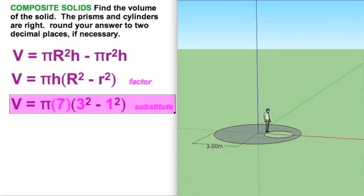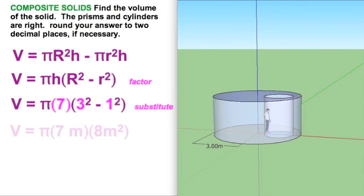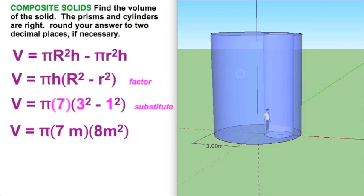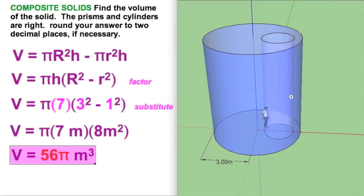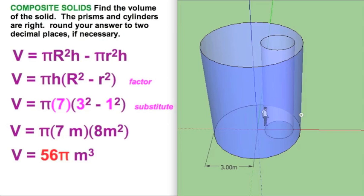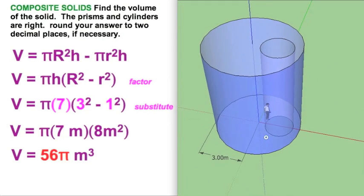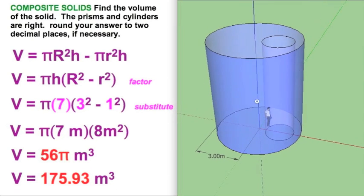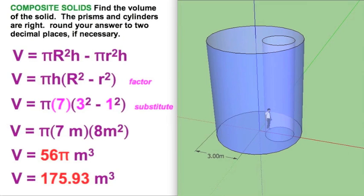We'll do the substitution. And we can simplify that. Remember, 3 squared, 9 minus 1 is 8. I'm putting the units in now. So I've got meters times square meters. And we all see where this is going. That's going to go to cubic meters. Now we can pull out our handy dandy calculator. And 56 times pi. And that's going to give us about, or to the nearest hundredth at least, 175.93 hundredths cubic meters.